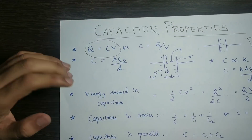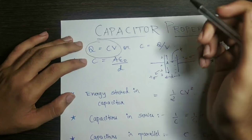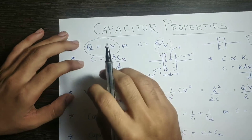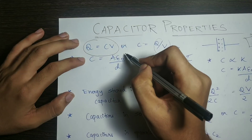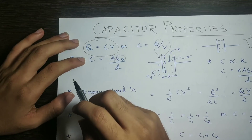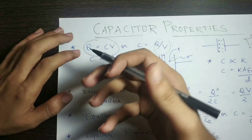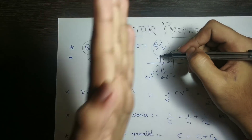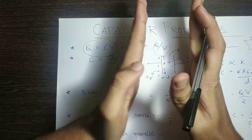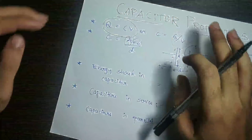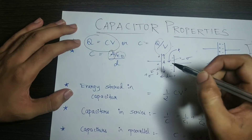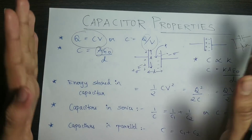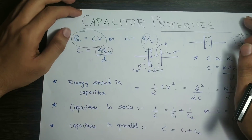The charge accumulated by a capacitor: Q is equal to C times V. So C equals Q divided by V. The original formula is C equals ε₀A divided by d, where ε₀ is the permittivity of free space, A is the area of the plate, and d is the distance between the plates.